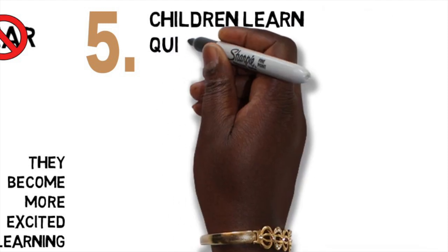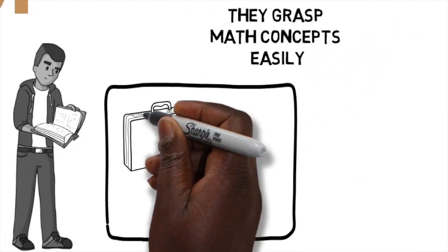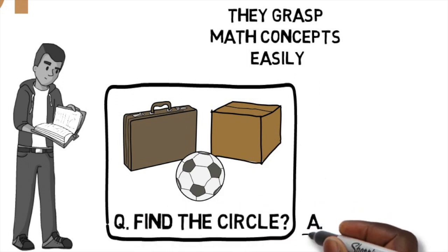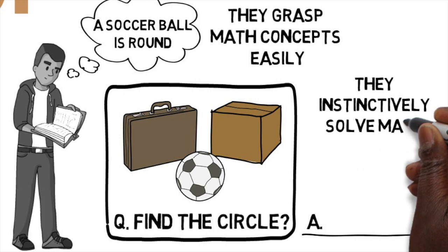Five, children learn quickly and intuitively through key lessons. They grasp math concepts easily because they understand how it applies in their everyday life. As they become more proficient with the concepts, they instinctively solve math problems naturally.